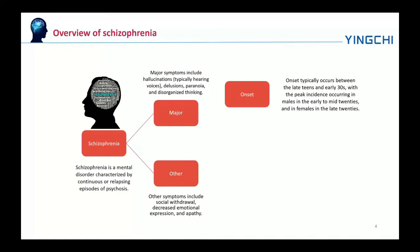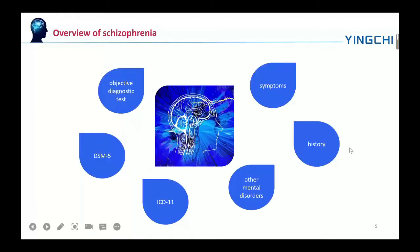Onset typically occurs between the late teens and early thirties. Symptoms typically come gradually, begin in young adulthood, and in many cases never resolve. There is no objective diagnostic test. The diagnosis is used to describe observed behavior that may stem from numerous different causes. Besides observed behavior, doctors will also take a history that includes the person's reported experiences and the reports of others familiar with the person when making a diagnosis.